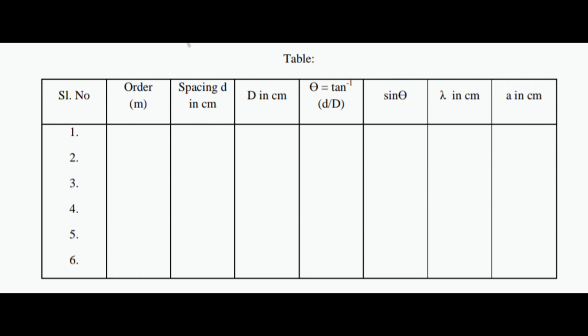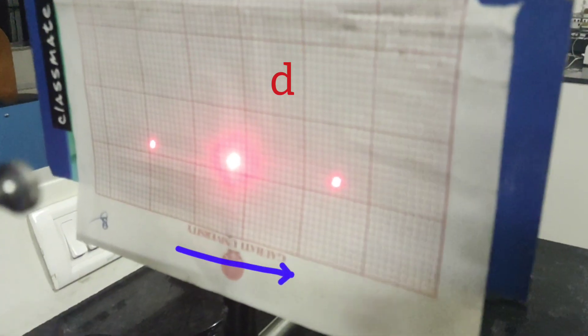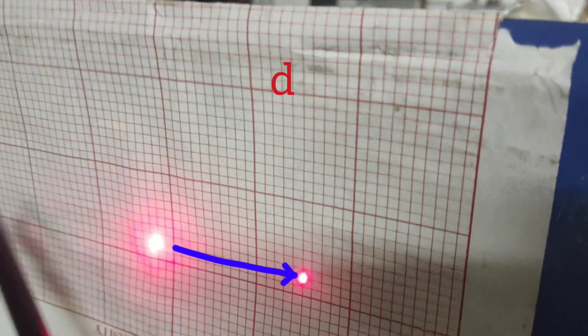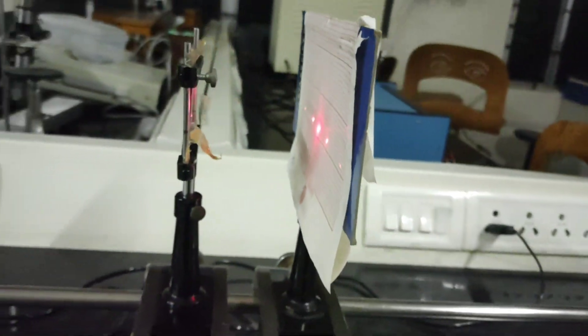First we do the experiment for first order. We calculate the value of small d where d is the spacing between the first order maxima and the central maxima, and capital D is the separation between the optical screen and the grating.